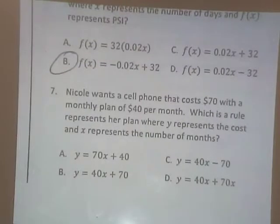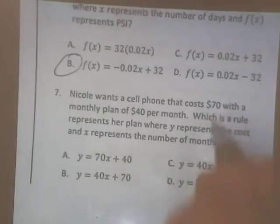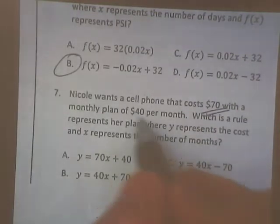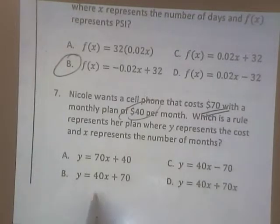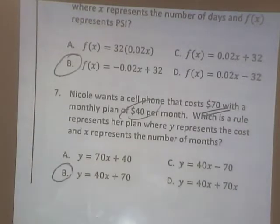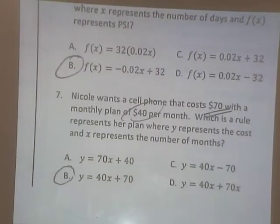Nicole wants a cell phone that costs $70 with a monthly payment of $40 a month. So we're starting with how much? $70. And then it's going to cost an additional $40 every month. That's a 1. It's D. Right? Both positives, right? Good.